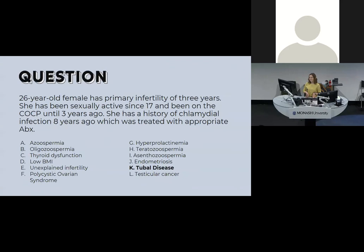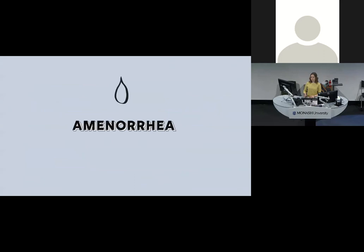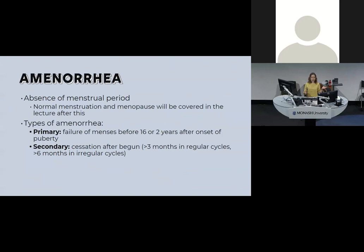Amenorrhea takes a similar approach to infertility. It's an absence of menstrual periods, with two types: primary — no period before the age of 16 or two years after the onset of puberty — and secondary, which is cessation of periods you've previously had: greater than three months if cycles were regular, or greater than six months if they were normally irregular.